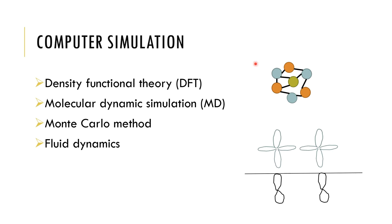Among the different types of computer simulation, there are molecular simulations as well as macroscopic simulations. Molecular simulations are primarily of three types: density functional theory, molecular dynamic simulation, and Monte Carlo method, which have been used for corrosion inhibitors. These help to simulate the molecular structure of the corrosion inhibitors as well as to monitor the interaction between the corrosion inhibitor and the steel substrate. Fluid dynamics comes into play as the macroscopic simulation part.